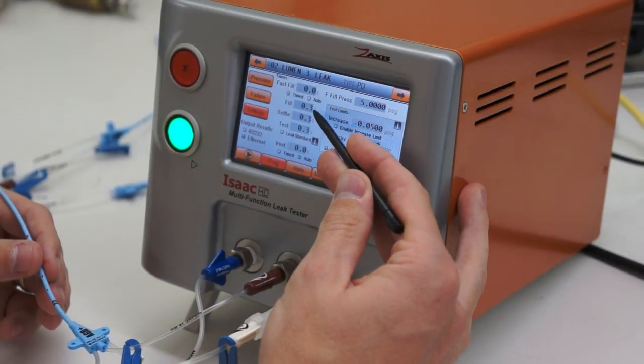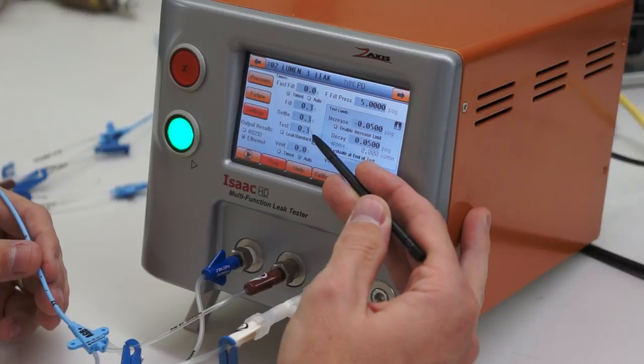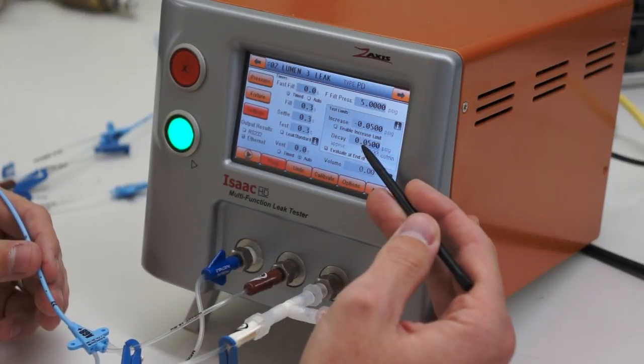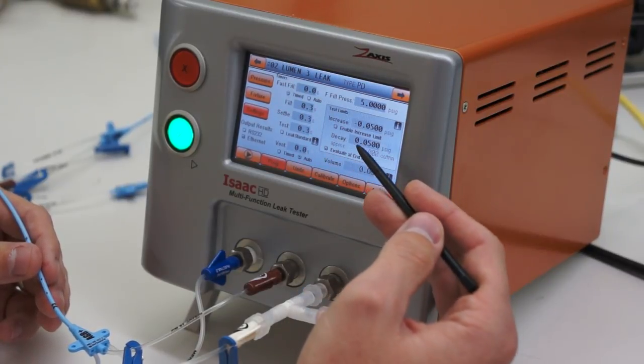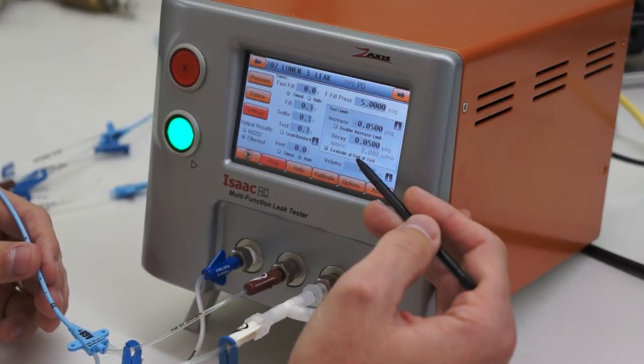We are filling for 0.3, settling for 0.3, testing for 0.3, and we're looking for a maximum decay of 0.05. That's just a number we've set. It will change later on.